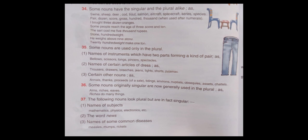Some nouns have the singular and plural alike: deer, swine, sheep, cod, trout, salmon, aircraft, spacecraft, series, species, pair, dozen, score, gross, hundred, thousand when used after numerals. I bought three dozen oranges. Some people reach the age of three score and ten. The sari cost me five thousand rupees. Stone and hundredweight: He weighs about nine stone. Twenty hundredweights make one ton.